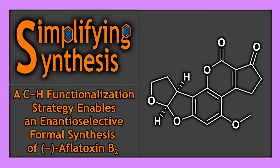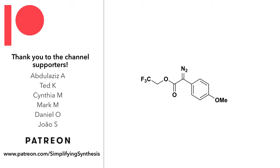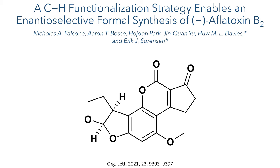Welcome back to Simplifying Synthesis. In this video we are going to look at the paper: a C–H functionalization strategy that enables an enantioselective formal synthesis of aflatoxin B2. This work was published in Organic Letters by the Sorensen and Davies groups.